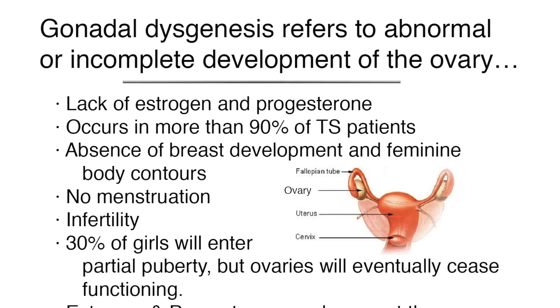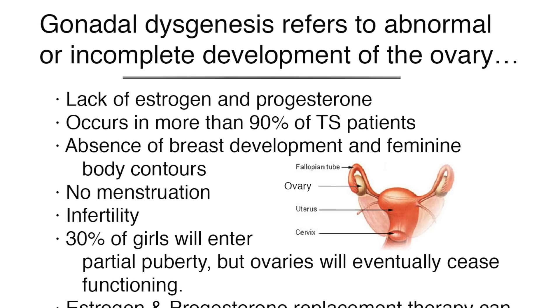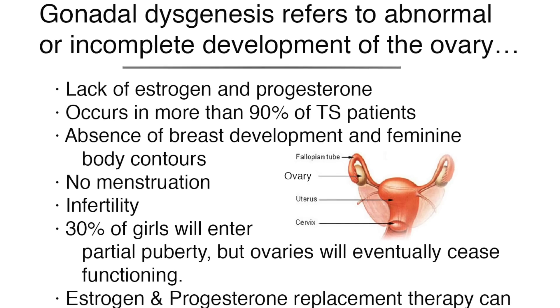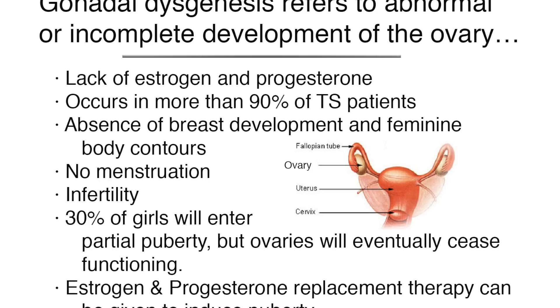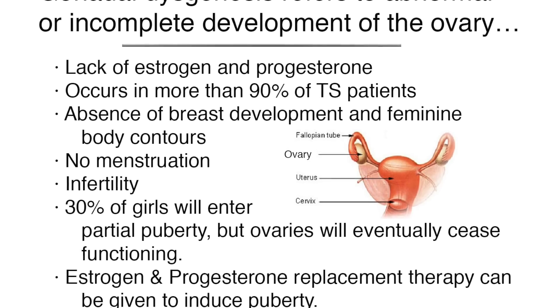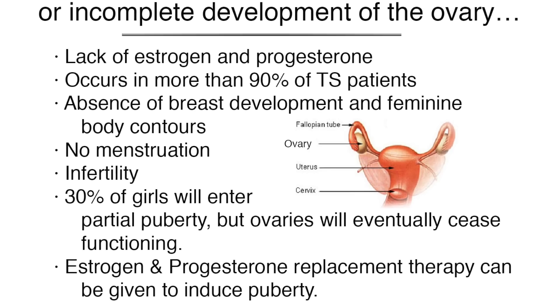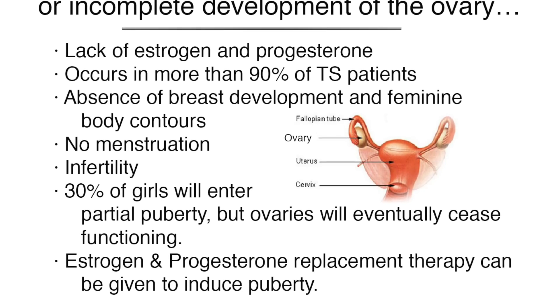Gonadal dysgenesis refers to the abnormal or incomplete development of the ovary. This causes a lack of estrogen and progesterone, and occurs in more than 90% of TS patients. There is an absence of breast development and feminine body contours, no menstruation, and infertility. 30% of girls will enter partial puberty, but ovaries will eventually cease functioning. Estrogen and progesterone replacement therapy can be given to induce puberty.